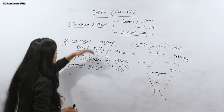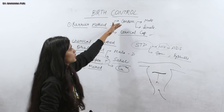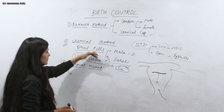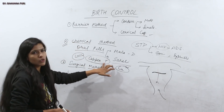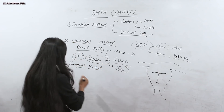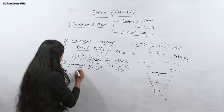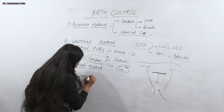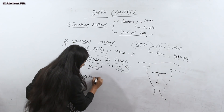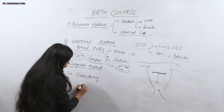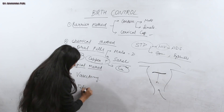So these are the two methods: the barrier method, which includes condoms and cervical cap, and the chemical method, which includes pills and Copper-T. After these, we come to the surgical method, where we will learn about vasectomy and tubectomy.